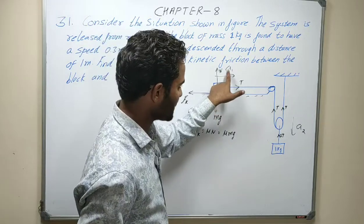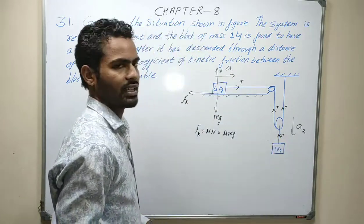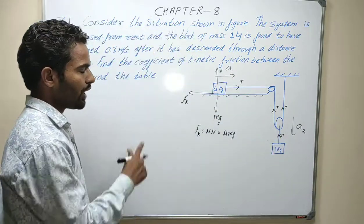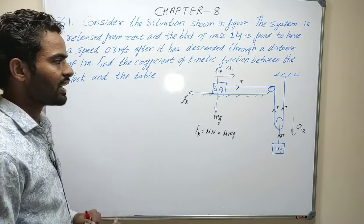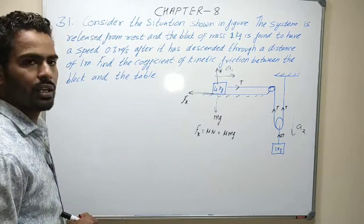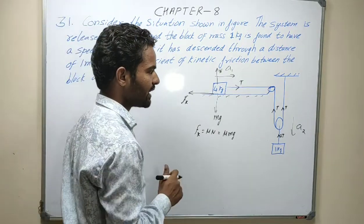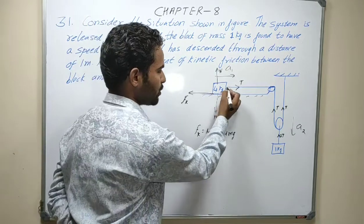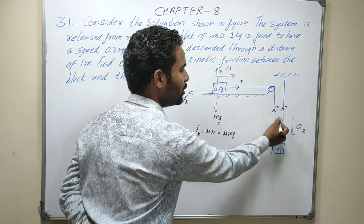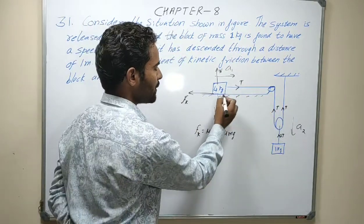First, we need to find the accelerations A1 and A2. In A1 and A2, we need to find the relation using the constrained motion concept — the point method to find the relation.